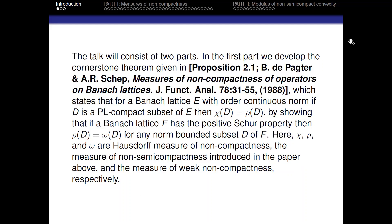In the first part, we developed the Cornersen theorem given by the factors. The theorem states that for a Banach lattice E with order continuous norm, if D is a PL-compact subset, then χ will be equal to ρ. And by showing that if a Banach lattice E has the positive Schur property, then ρ will be equal to the weak measure of non-compactness of D for any norm-bounded subset D. Here, χ, ρ, and w are the Hausdorff measure of non-compactness, the measure of non-semicompactness, and the measure of weak non-compactness.